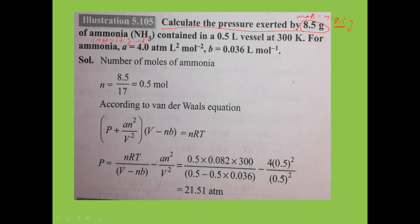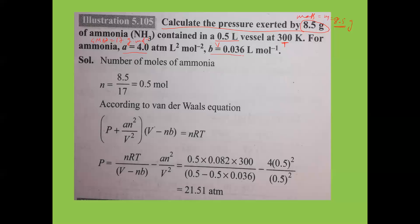For ammonia, the Van der Waals constant a = 4 atm·L²·mol⁻² and b = 0.036 L·mol⁻¹. Number of moles = 8.5/17 = 0.5 mol. We need to calculate pressure P. According to Van der Waals equation: (P + an²/V²)(V − nB) = nRT.